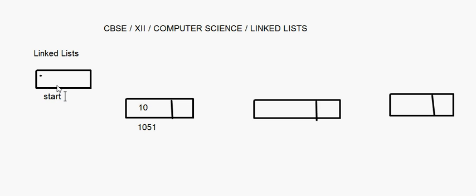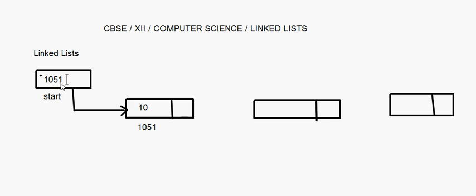This is called the start pointer. This pointer points to the beginning of the list. Start is a pointer, meaning it can contain only addresses. Start is pointing to the first node whose address is 1051, so start is going to have the value 1051.